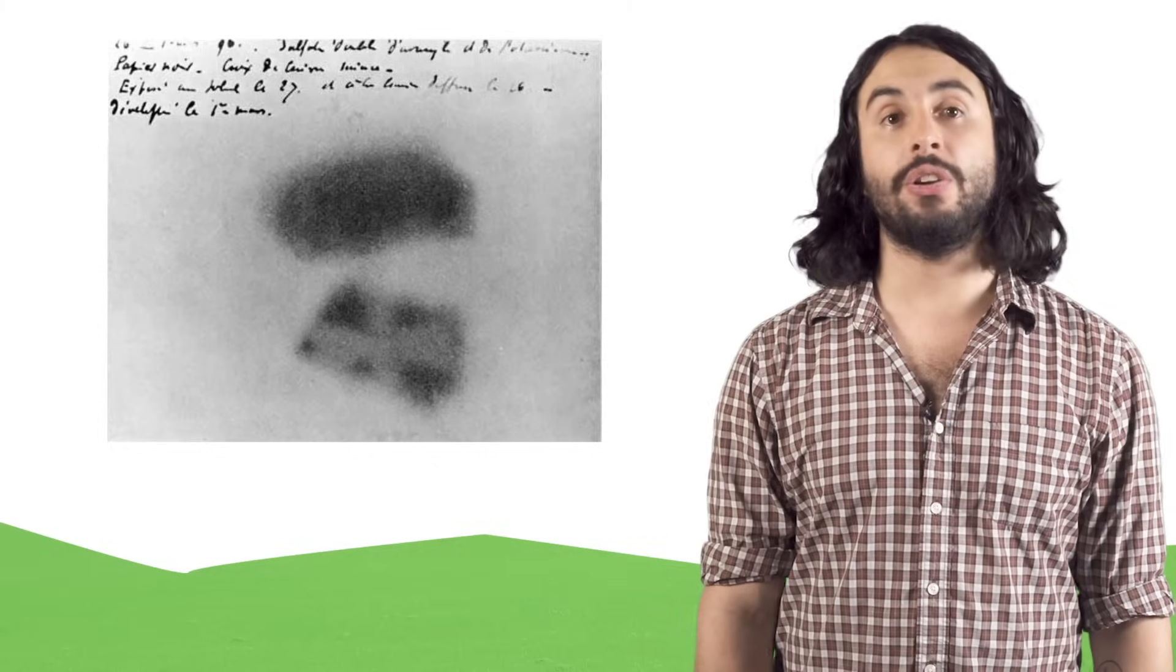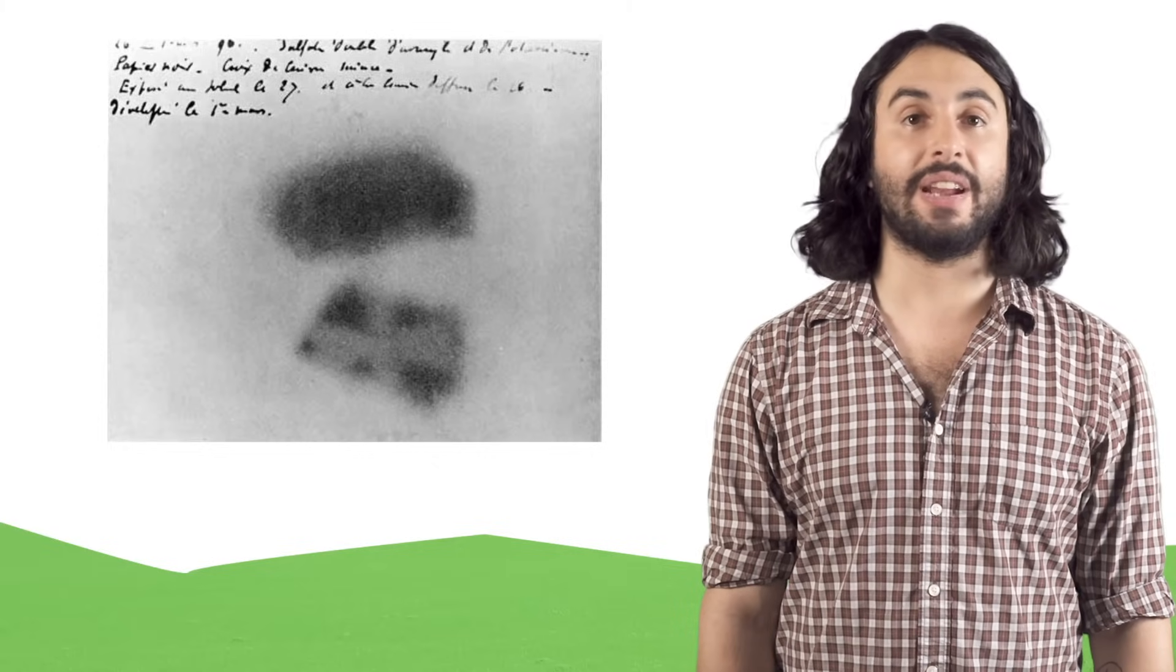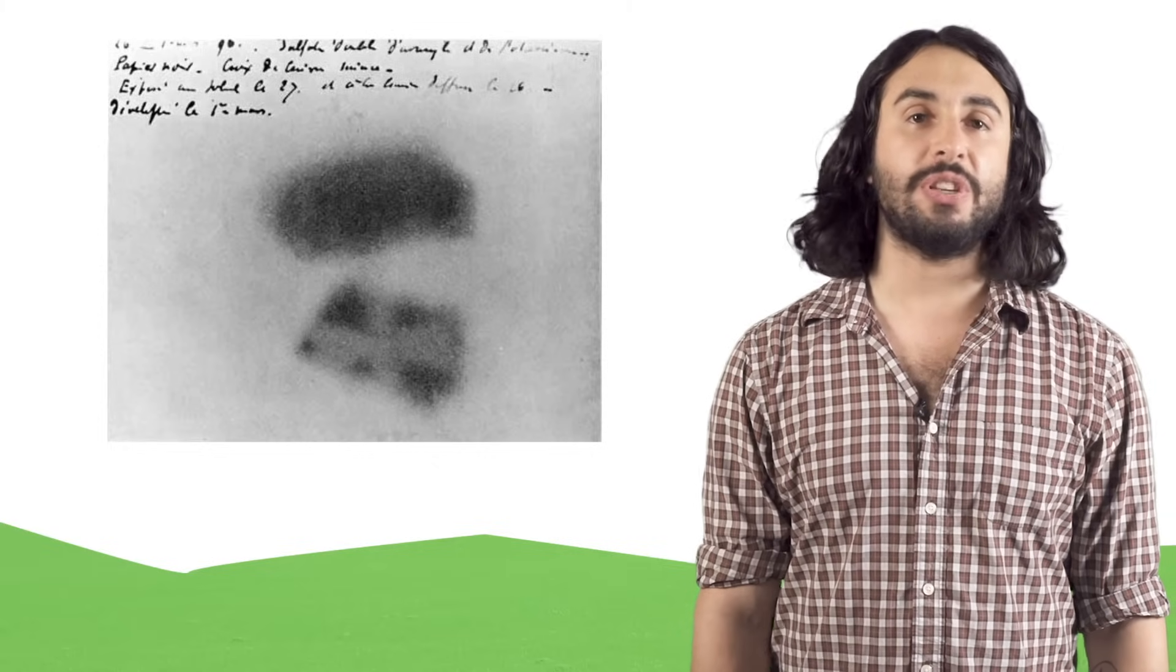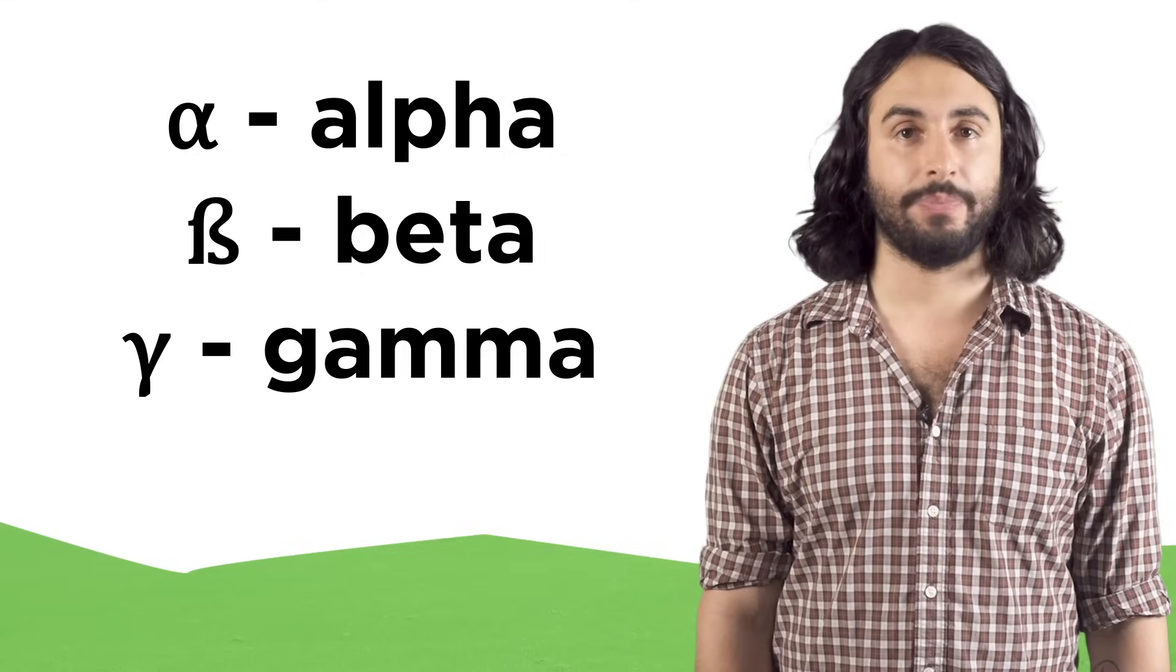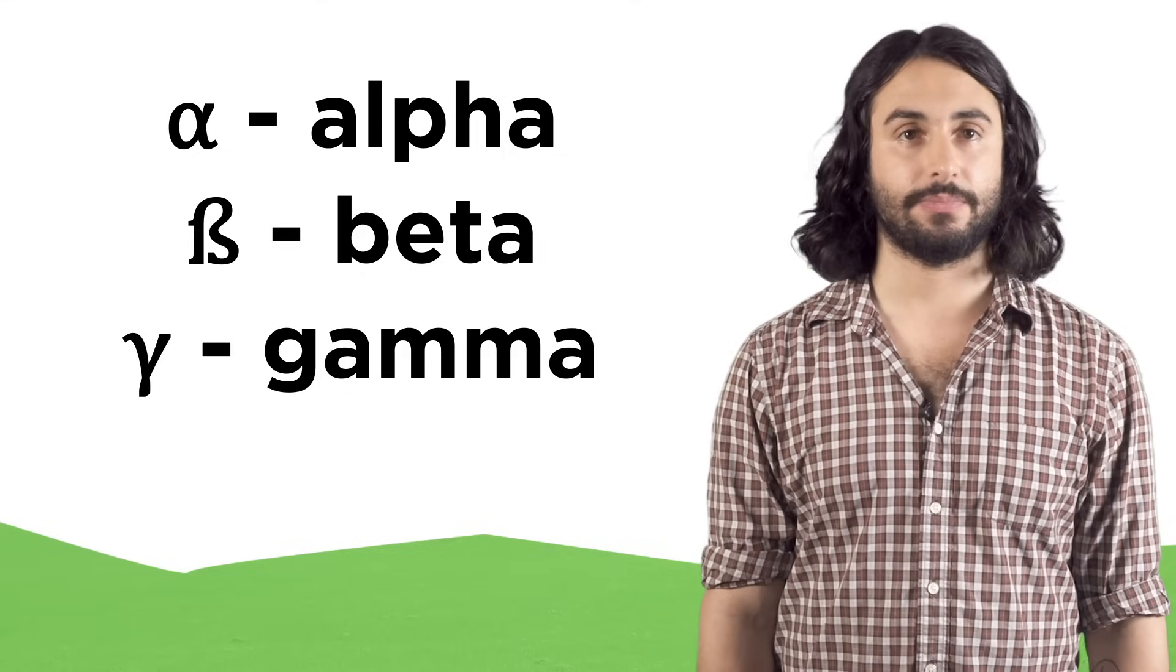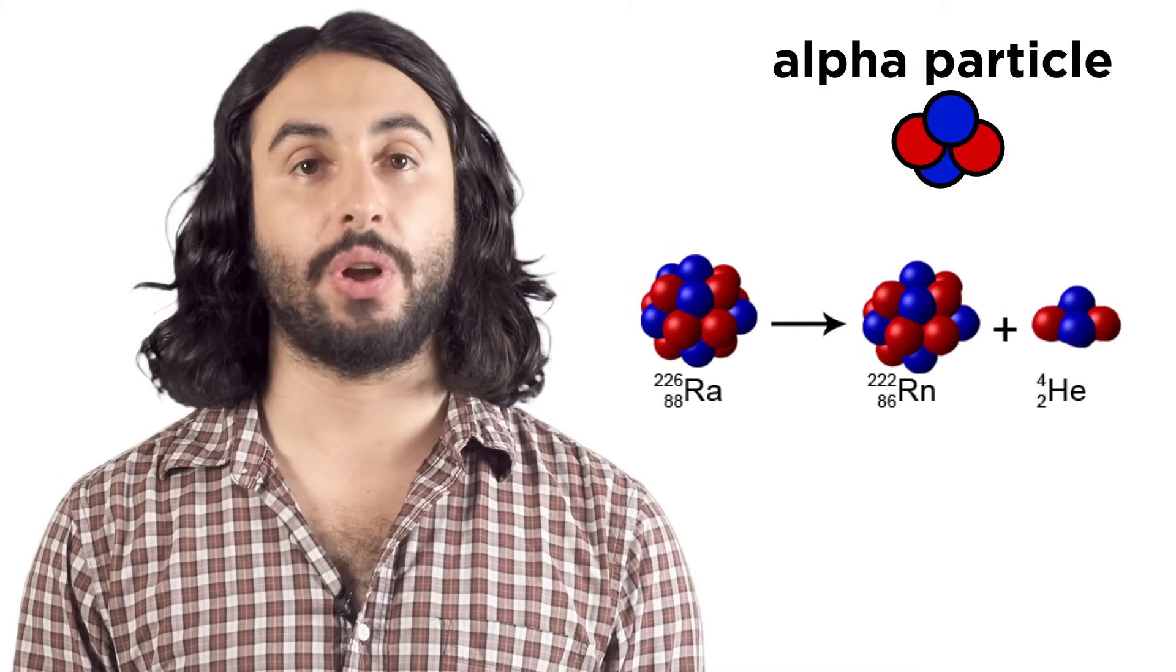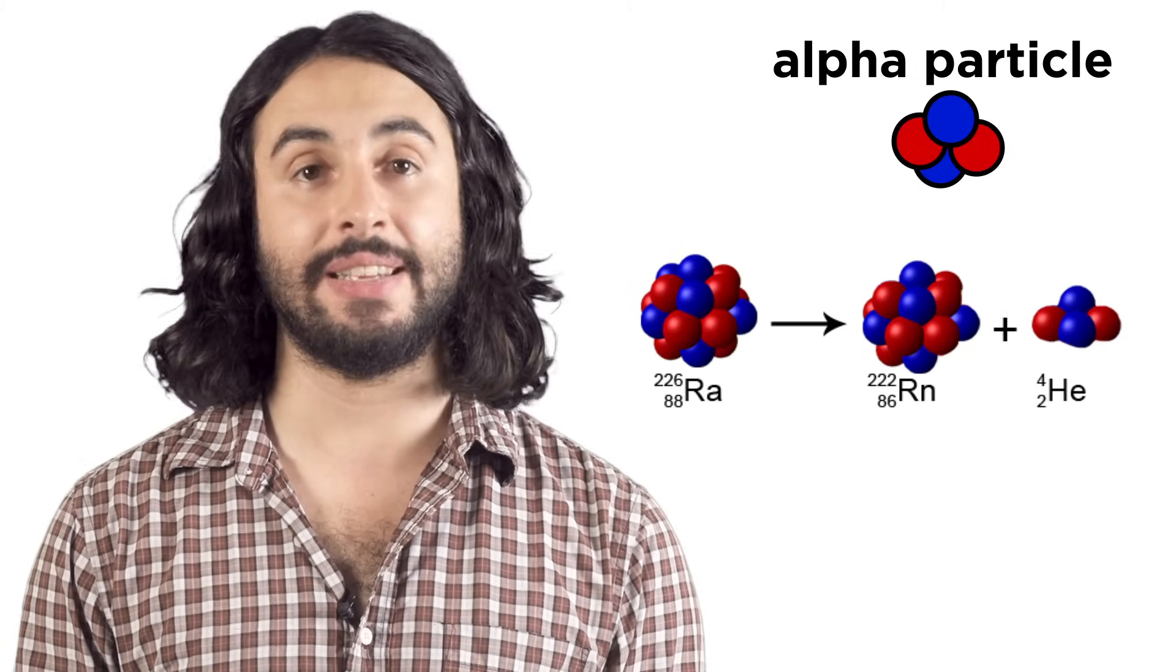At the time we didn't know about the subatomic particles the radiation was comprised of, so we just named them with Greek letters and discovered their identities later. An alpha particle is essentially a helium nucleus, two protons and two neutrons. Emitting an alpha particle will result in transmutation, as seen here.